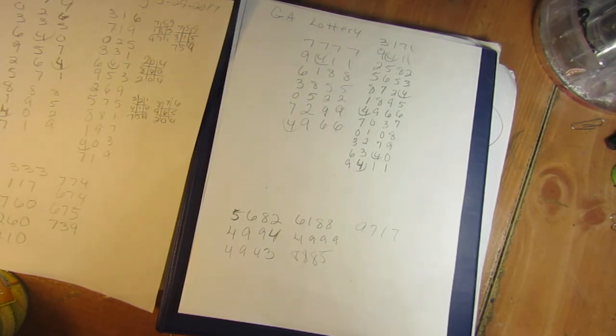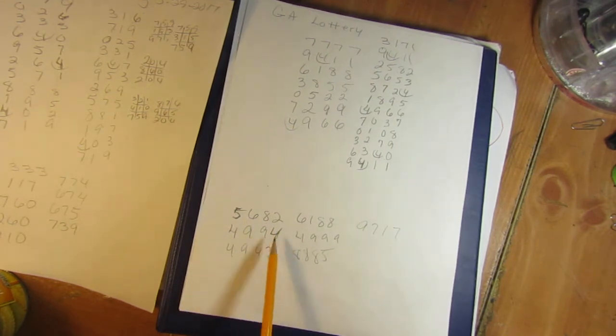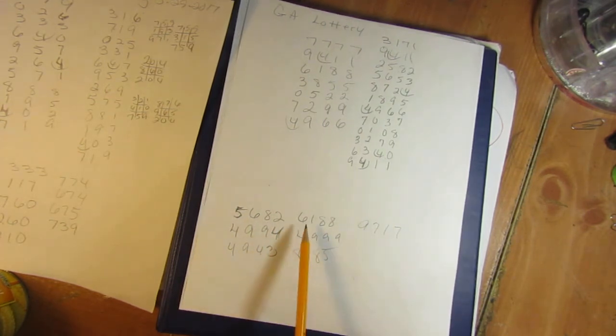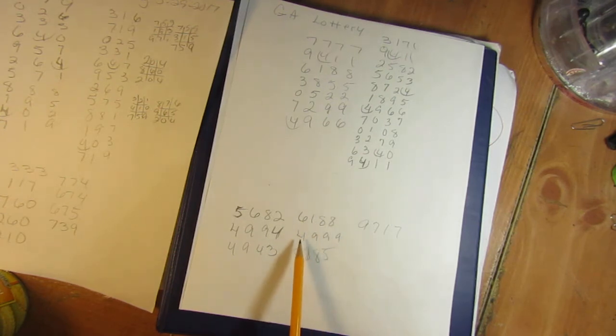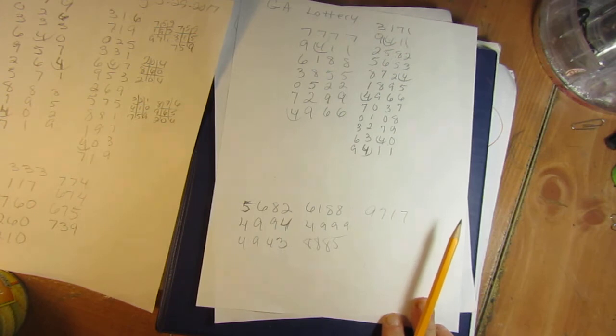These are the numbers that I got: 5-6-8-2, 4-9-9-4, 4-9-4-3, 6-1-8-8, could be 4-9-9-9, could be 8-8-8-5, and 9-7-1-7. Those are the Pick 4 numbers that I picked for tonight. Hopefully we'll get something out of it.